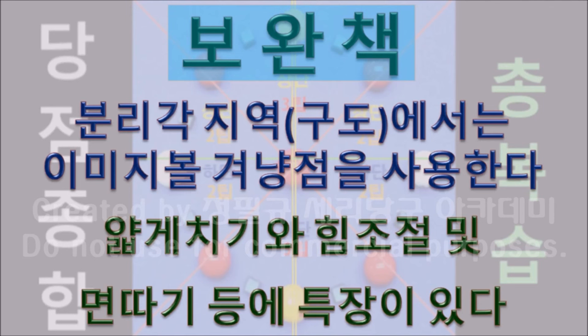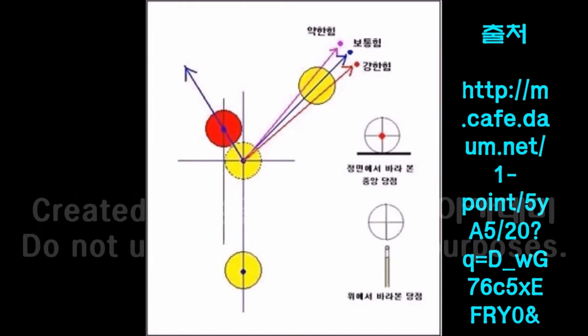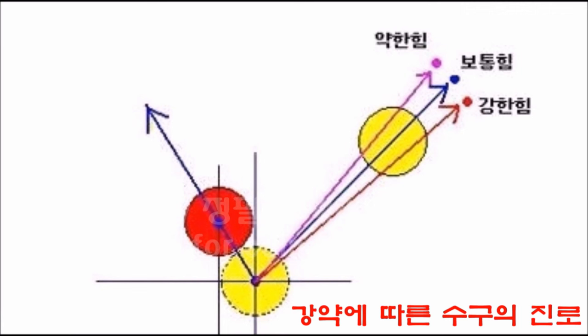밀어치기나 끌어치기의 경우에는 두께가 두꺼워야 하지만, 분리각 지역에서는 두께가 1/1보다 작아서 얇게 칠 수 있고 힘 조절에 유용합니다. 동일한 두께에서도 힘의 강약이나 당점의 상하에 따라서 분리각이 달라질 수 있습니다. 두께 1/2, 중심 당점 조건에서 힘이 강할수록 분리각이 커지는 것을 볼 수 있습니다.